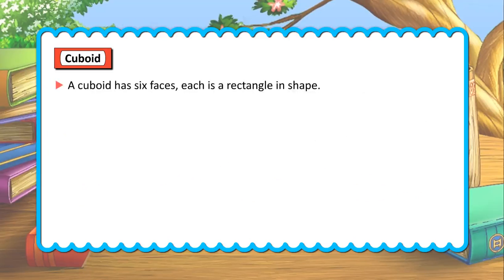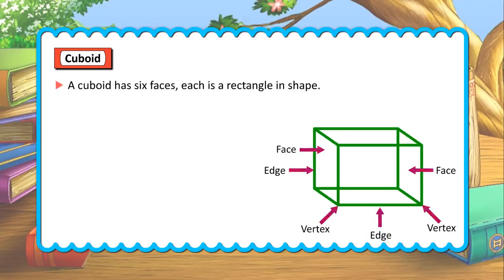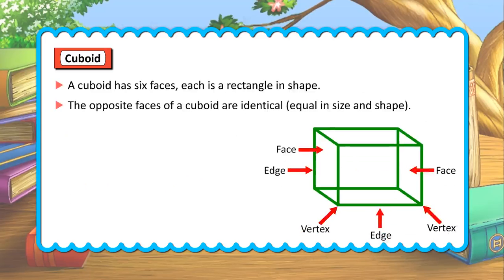A cuboid has six faces. Each is a rectangle in shape. The opposite faces of a cuboid are identical, equal in size and shape.